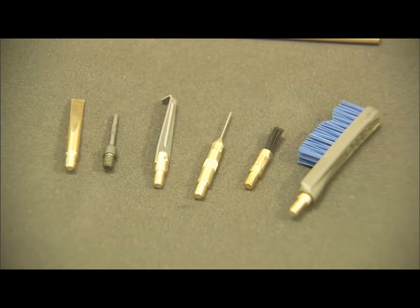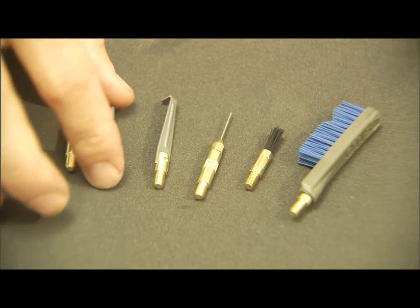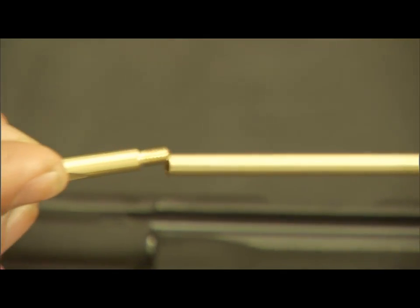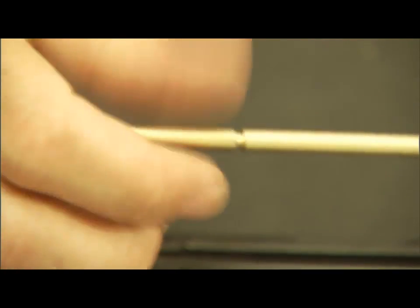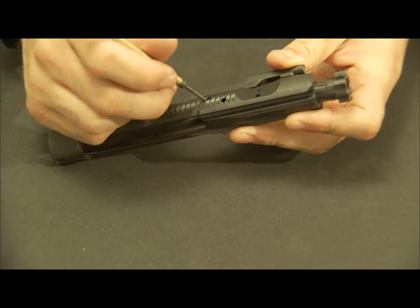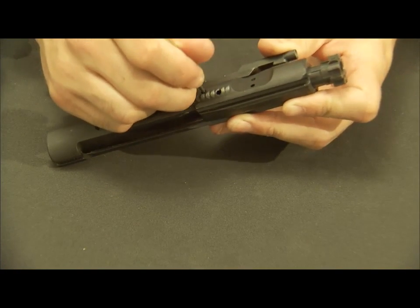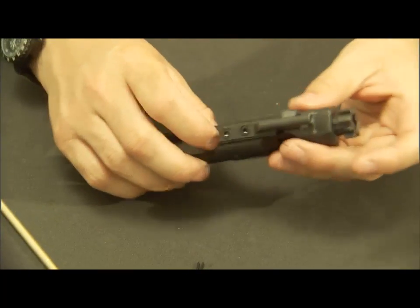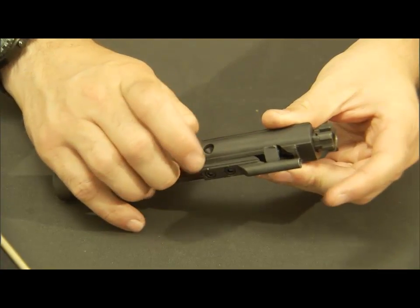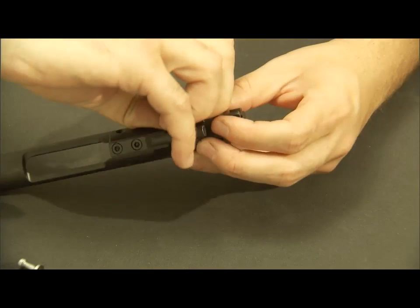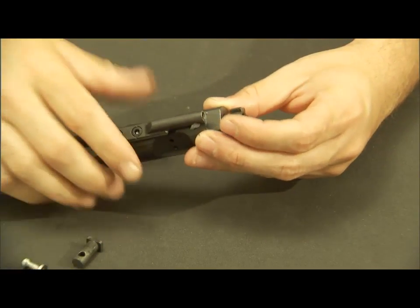To disassemble the bolt and the bolt carrier, I'll use the pin punch on one end of the rod handles and the brass scraper on the other. First we need to push the pins out with the pin punch. Remove the firing pin, and remove the cam, and remove the bolt.